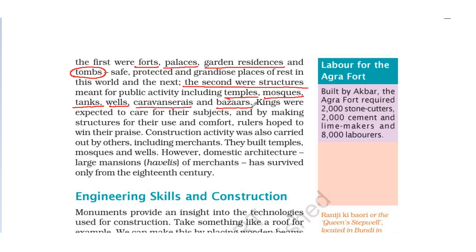Kings were expected to care for their subjects. The king had to think about the welfare of the people and take the right decisions for them. By making structures for their use and comfort, rulers hoped to win their praise. After working for the people and bringing them into a comfort zone, rulers hoped that people would speak well of them and that they would be worthy of people's appreciation.